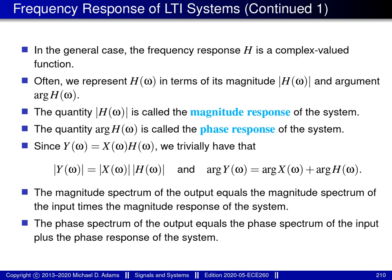In the most general case, the frequency response function big H is complex valued. For this reason, it's sometimes convenient to represent this function in polar form — in terms of its magnitude and argument. The magnitude of the frequency response is referred to as the magnitude response of the system, and the argument of the frequency response is known as the phase response of the system.